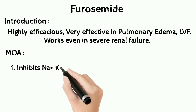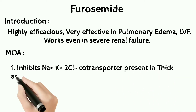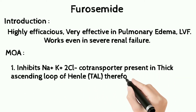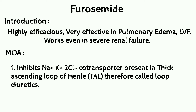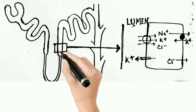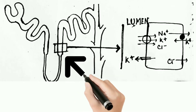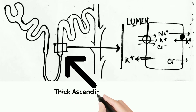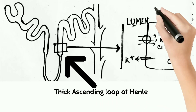The mechanism of action of furosemide: it acts mainly on the sodium-potassium-chloride co-transporter present in the thick ascending loop of Henle, and therefore it is called a loop diuretic because it acts on the loop of Henle.